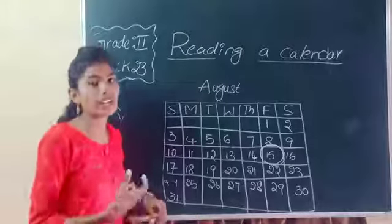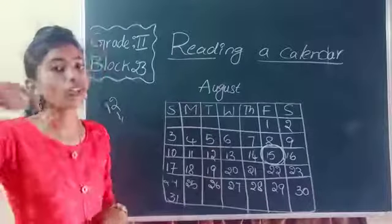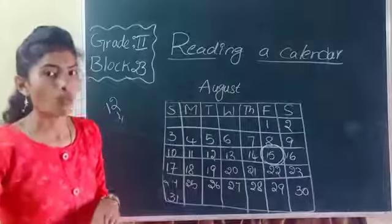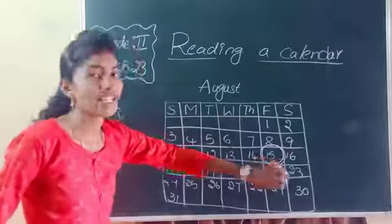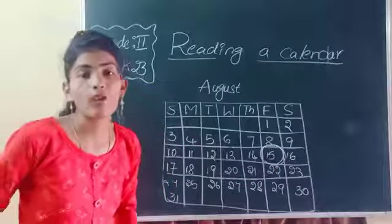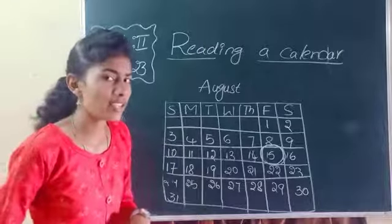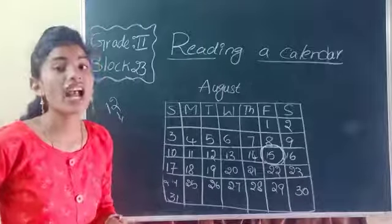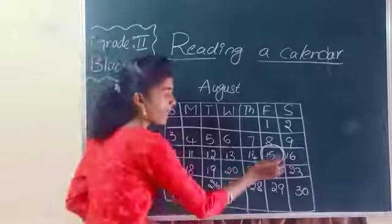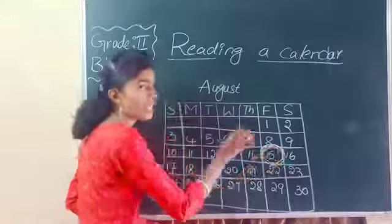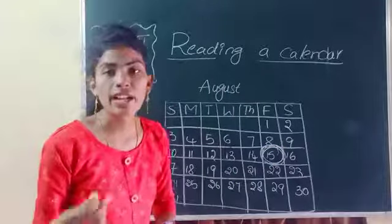So in any year — whether it is 2014, 2020, 2022, or 2024 — August 15th is always Independence Day. It is a constant festival for us. August 15th won't change in any year. Every year on August 15th we celebrate Independence Day.